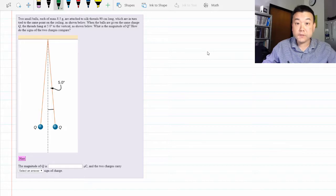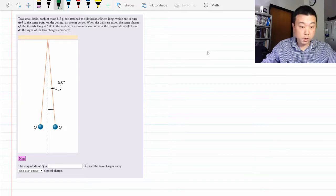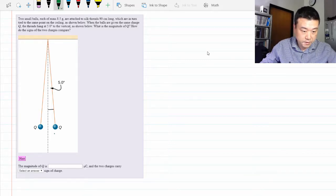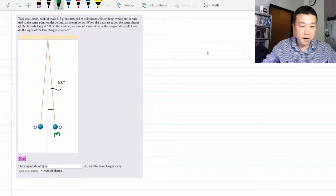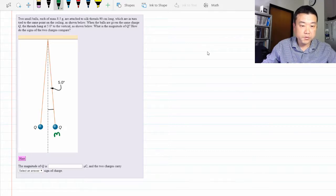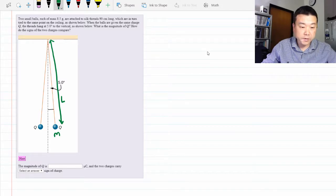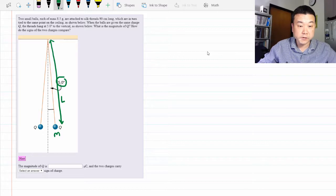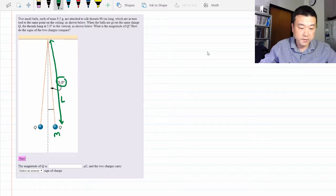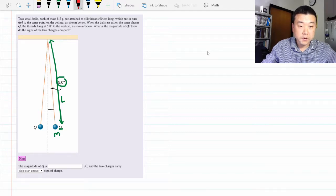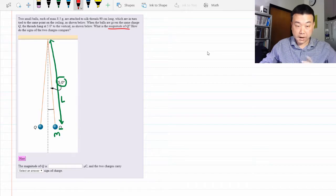So let's review what information is given. Two small balls, each of some mass, are attached to threads of some length, which are then tied to the same point, and we are given the angle that the thread makes with the vertical. The balls are given some charge q, and they hang like this. The question asks for the magnitude of the charge.